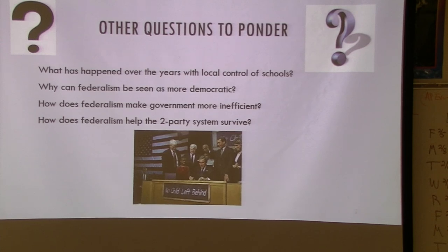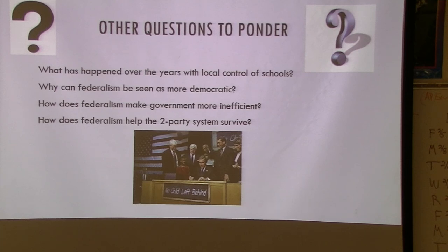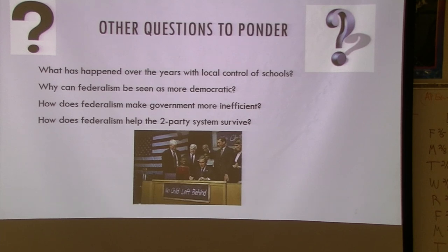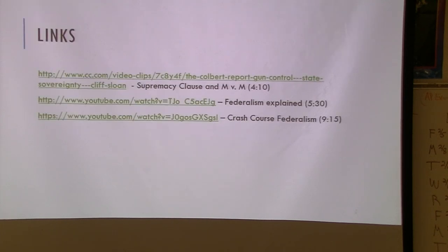How does federalism help the two-party system survive? You can have an election where Democrats do well nationally and Republicans do well nationally — they're always staying alive because of the state level. In 2016 it was a bad election for Democrats, but they still won many mayoral campaigns. In 2020 it wasn't as good a year for Republicans, but they still controlled different state houses. So there's always a fallback level.